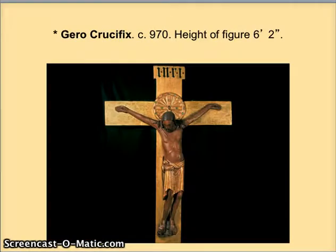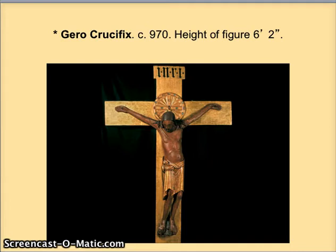As the millennium came to a close, there was a group called the Ottonians that were in Austria and Germany, and this is a prime example of their work. It's a life-sized crucifix that actually has a hole at the back of the head to put the host in.